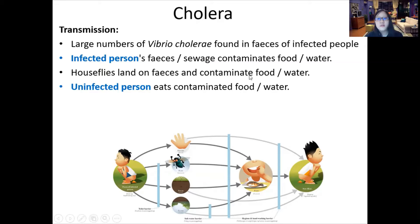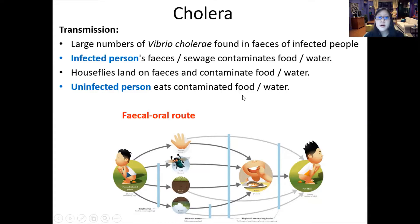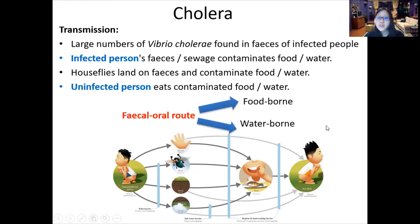Large numbers of Vibrio cholerae are found in the feces of infected people. The infected person's feces contaminates food or water; houseflies may land on those feces and contaminate food and water as well. An uninfected person then eats the contaminated food and water. This entire process is called the fecal oral route. Cholera is spread by the fecal oral route, which comprises both waterborne and foodborne transmission.